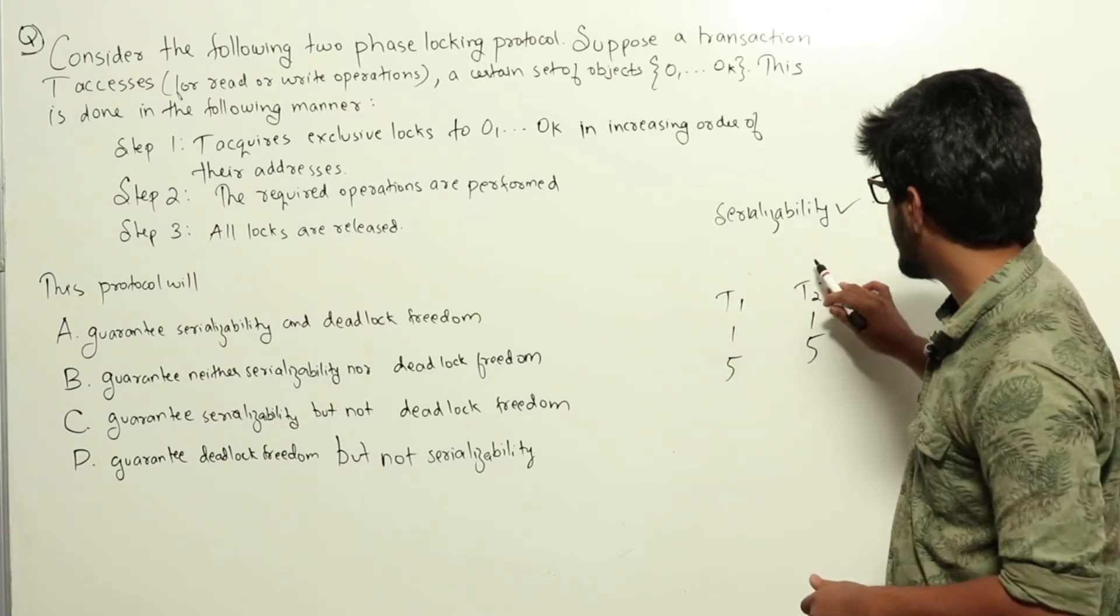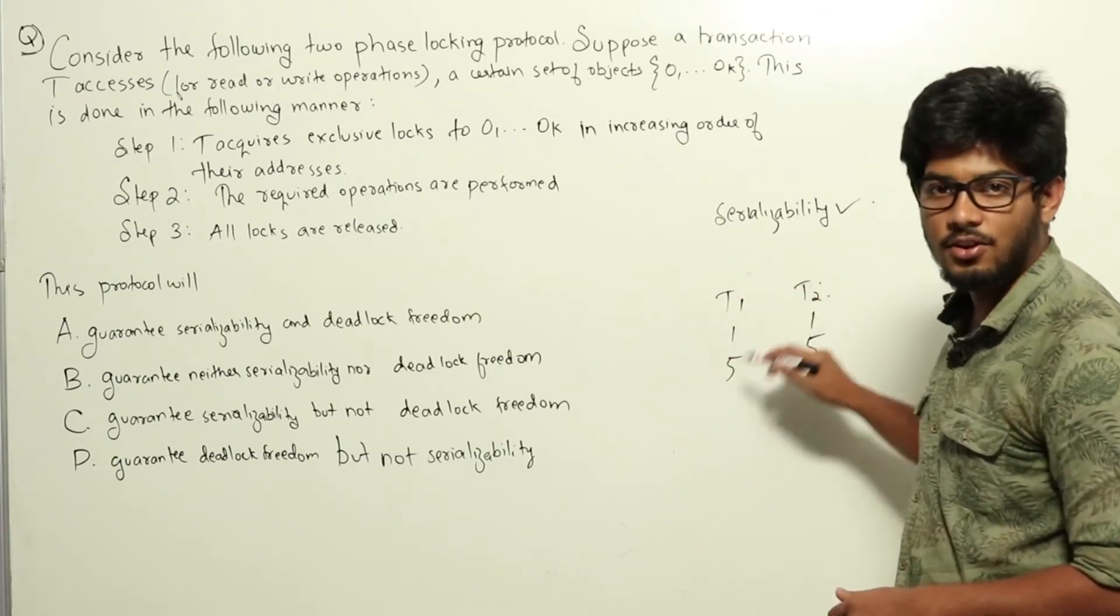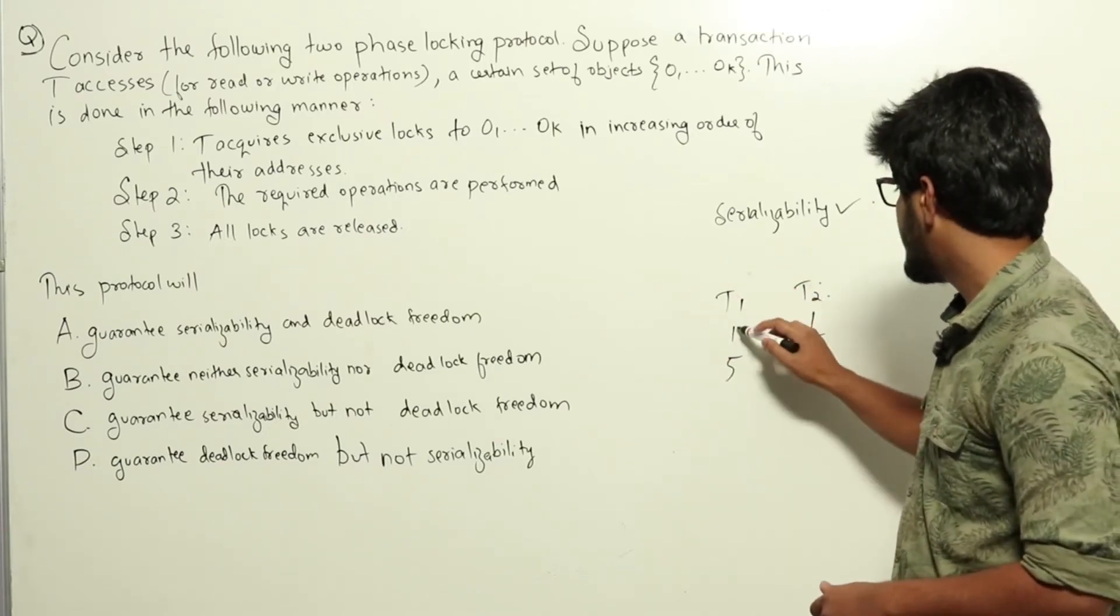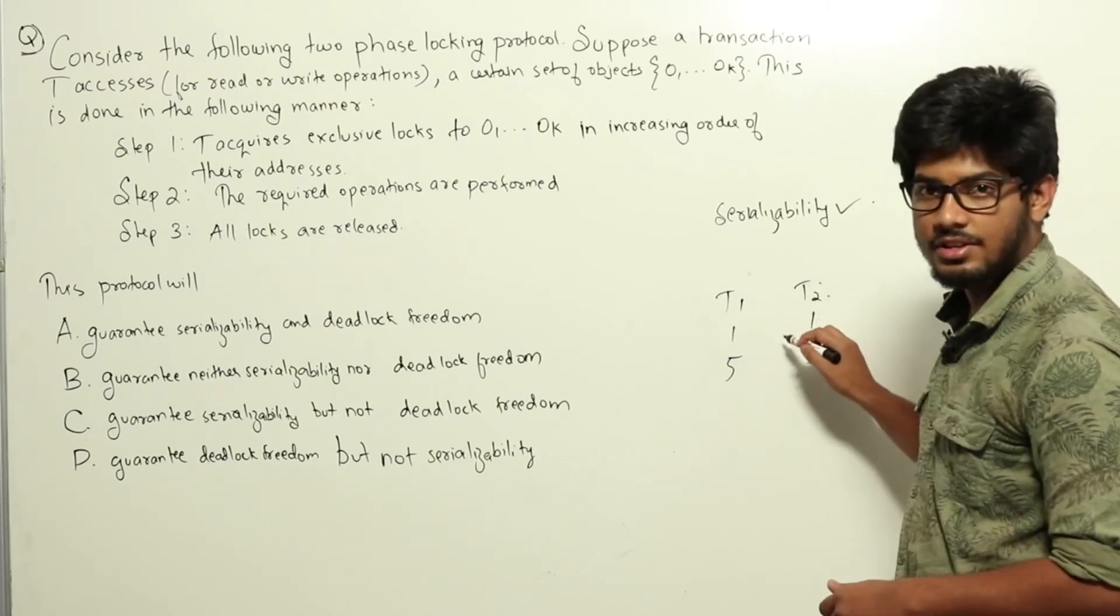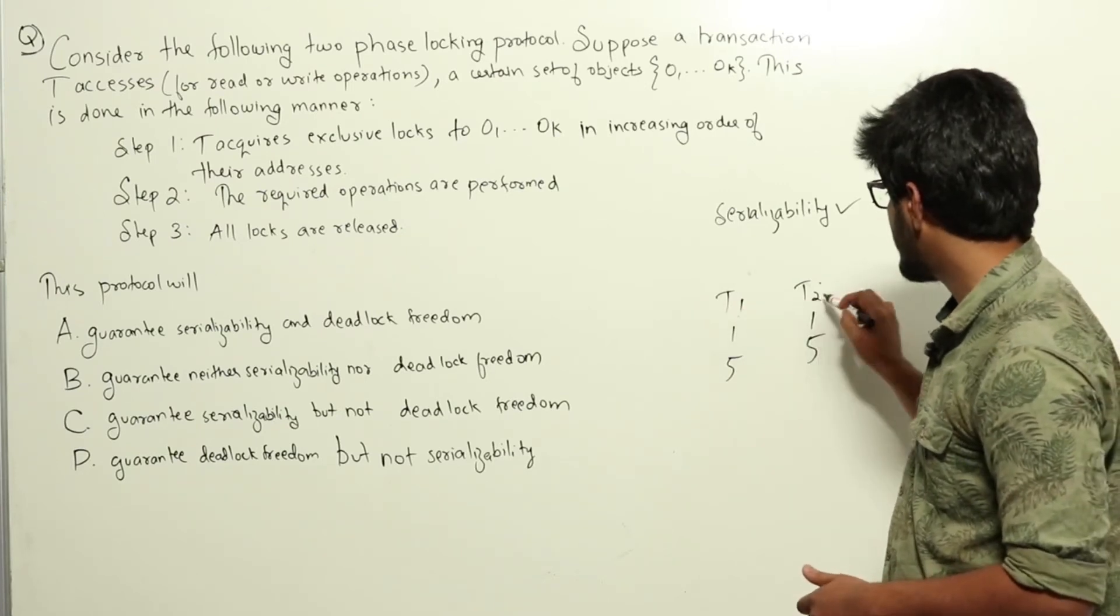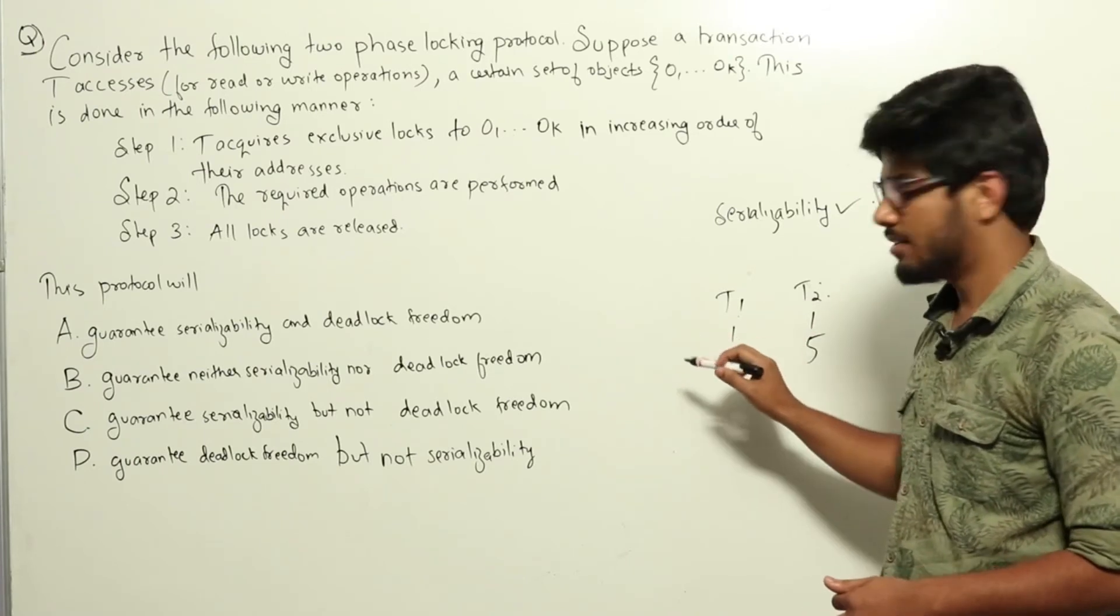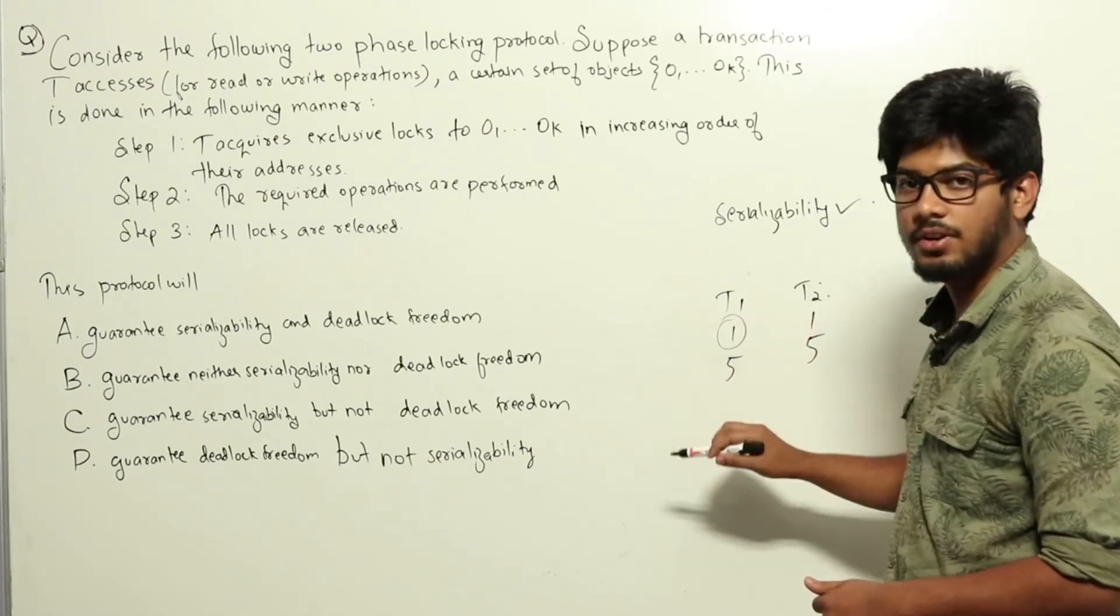But if T1 and T2 were acquiring locks in the increasing order of their addresses, both will try to acquire lock to 1 only first. Which means that either T1 or T2 only will get the lock to object 1. Let's say T1 got the lock to object 1.